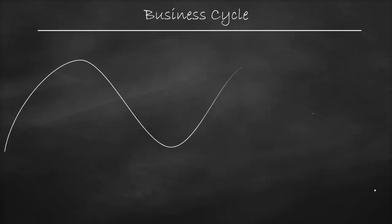This video is about the business cycle. Do you think that our economy is a straight line, which means our output is constant over time in the short run? Of course not. The economy moves in cycles.